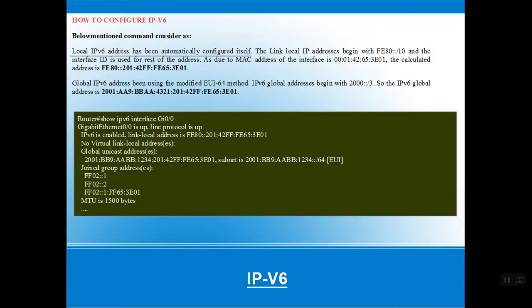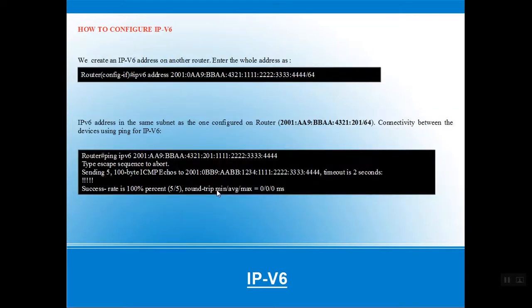We can configure IPv6 addresses on another router by entering the full address using the 'ipv6 address' command. On the same subnet, we can verify the configuration using the 'ping ipv6 <ipv6-address>' command, which gives specific detail about the configuration.